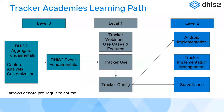In summary, at Level 0 (foundational) we have DHIS2 aggregate fundamentals, capture and analysis, customization, and DHIS2 event fundamentals. At Level 1, we have tracker-related webinars, use cases, features, tracker use, and tracker configuration academies. At Level 2 for tracker, we have DHIS2 Android implementation, tracker implementation management, and DHIS2 surveillance—three academies for those who want to deep dive into DHIS2 tracker.